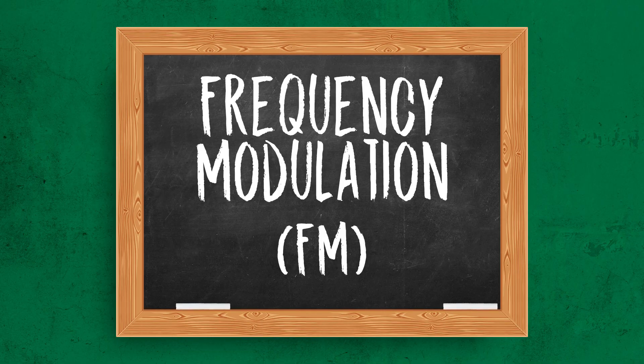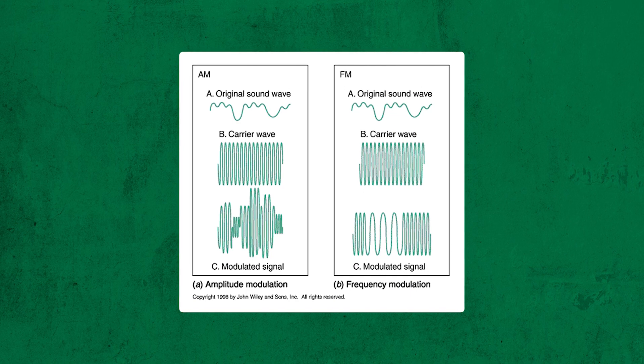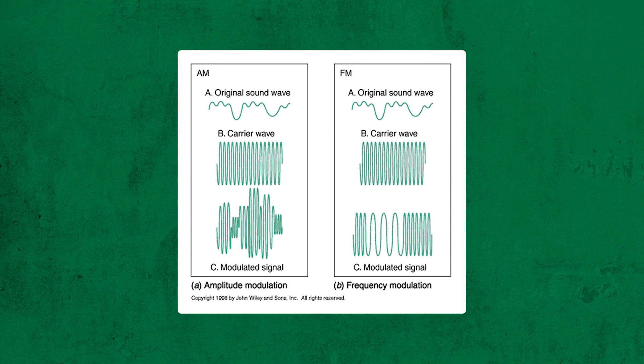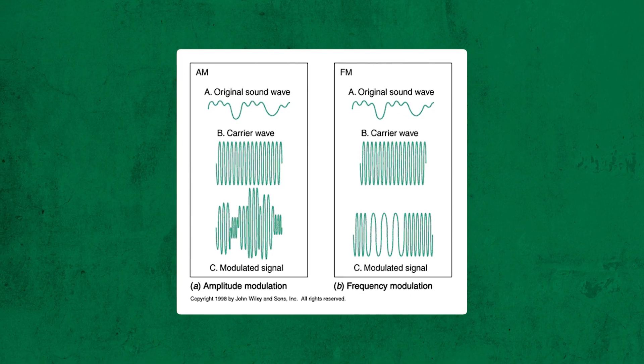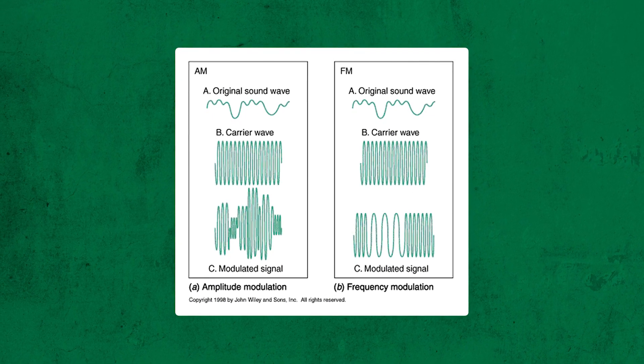Frequency Modulation, or FM. These are the types of signals used to communicate by voice over most repeaters. FM is a method of combining an RF carrier with an information signal such as voice. The voice information or data changes the RF carrier frequency in the modulation process — we use voice or data to vary the frequency of the transmitting signal. FM broadcast stations and most professional communication teams like police, firefighters, and taxi drivers use FM. VHF and UHF FM voice is the most popular amateur mode.